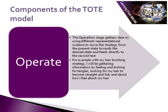The operation phase of the TOTE model is where you gather data by using different representational systems to move the strategy from the present state towards the desired state, and feeds directly into the second test. For example, with my hair brushing strategy I will gather information by brushing the hair and feeling and looking for the tangles, looking for my hair to become straight and tidy, and about how I feel about my hair. So you're looking for what the person does to gather the data — what do they see, hear, feel, taste, smell or say to themselves in order to move them from the trigger to the second test, and in what order do they do that? Because both what they do and the sequence in which they do it is important in achieving what they achieve.